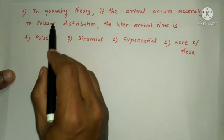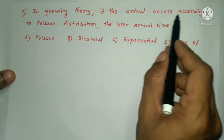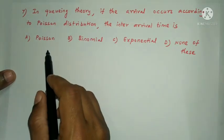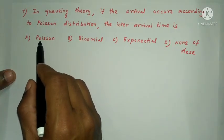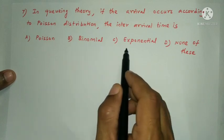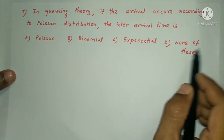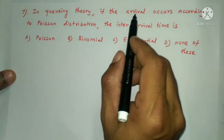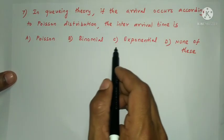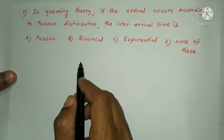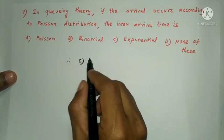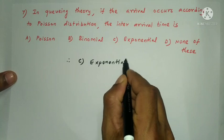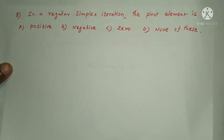Next question: in queuing theory, if arrivals occur according to a Poisson distribution, the inter-arrival time follows which distribution? Options: Poisson, Binomial, Exponential, None of these. The answer is option C: Exponential.